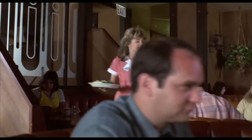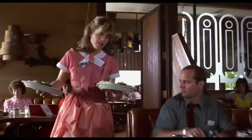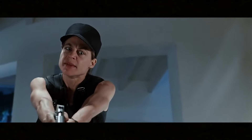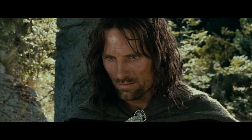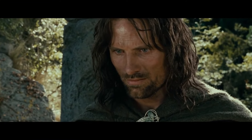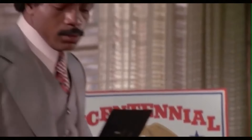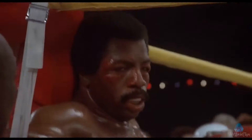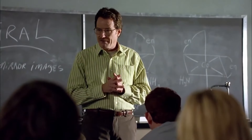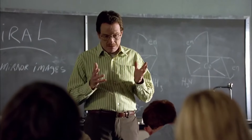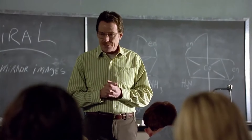For example, in Terminator 1 and 2, Sarah Connor starts as an everyday waitress and becomes a warrior. In the Lord of the Rings trilogy, Aragorn starts as a ranger who grows to accept his destiny and responsibility as king. In the Rocky movies, Apollo is introduced as the heavyweight champ before gradually losing his image, his title, and eventually his life. And in Breaking Bad, Walter White transforms from a timid high school teacher to a powerful drug kingpin.